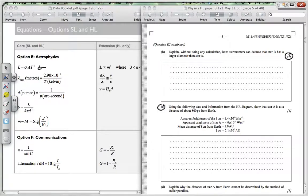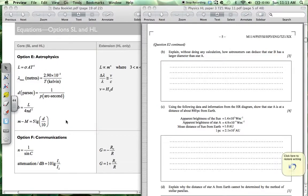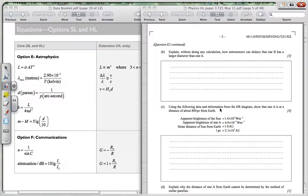Fine, going on to question C. We have, using the following data and information from the HR diagram, show that star A is at a distance of 800 parsecs from the Earth.